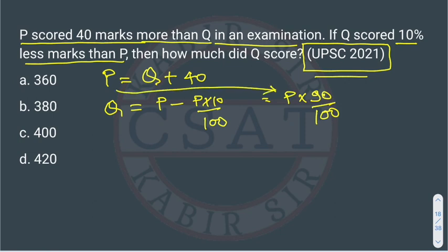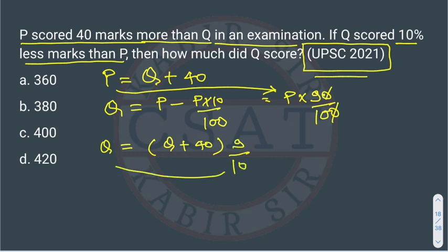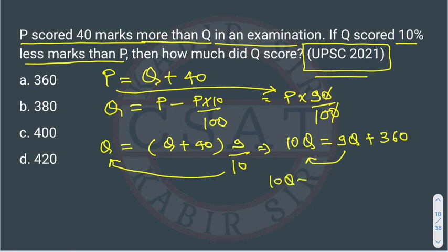Now we substitute the value of P. Since P = Q + 40, we get Q = (9/10) × (Q + 40). The 10 moves to the left side: 10Q = 9Q + 360. Bringing 9Q to the left: 10Q − 9Q = 360, so Q = 360.